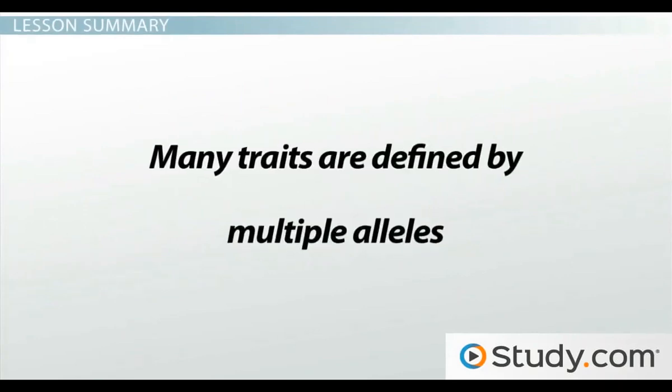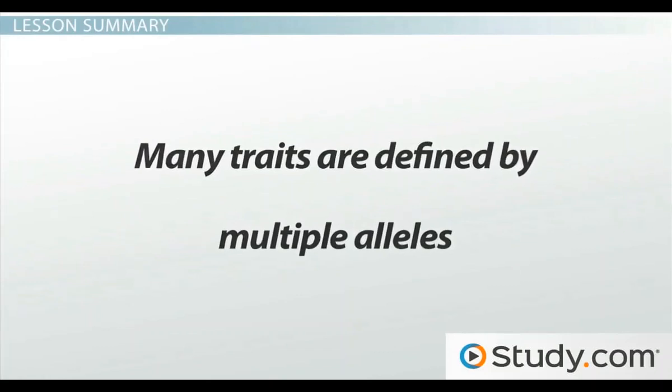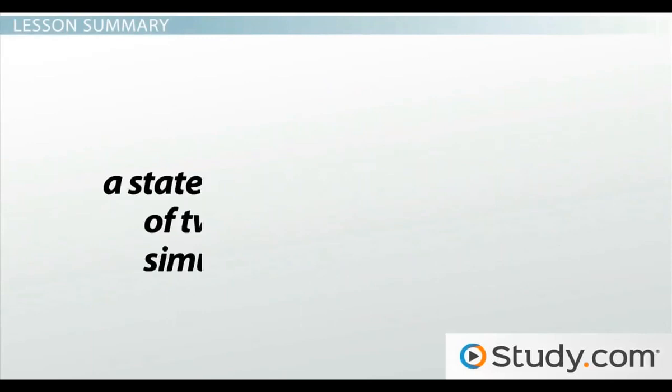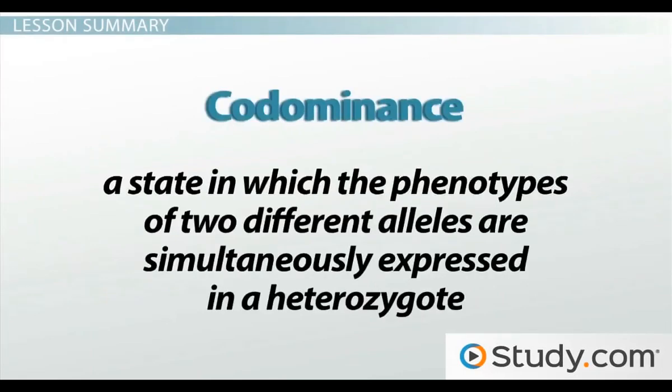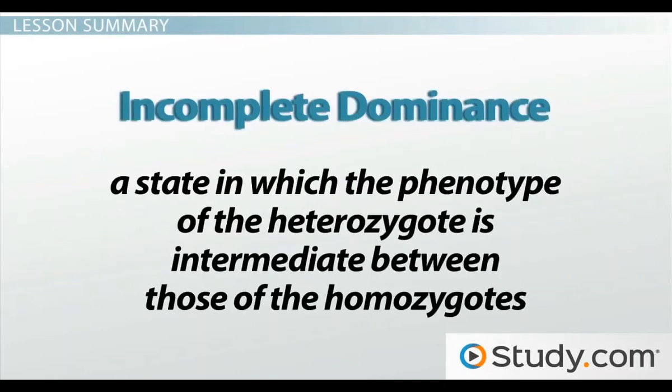In summary, we've learned that many traits are defined by multiple alleles. For instance, we saw that there are three alleles at the human ABO blood type locus. Codominance is a state in which the phenotype of two different alleles are simultaneously expressed in a single heterozygote. Incomplete dominance is the state in which the phenotype of the heterozygote is intermediate between those of the homozygotes.